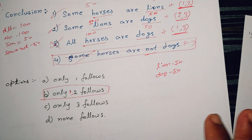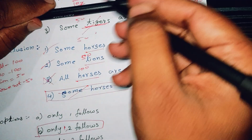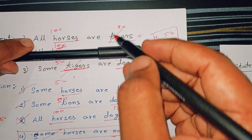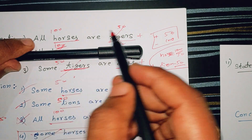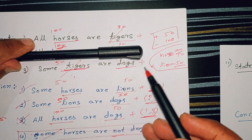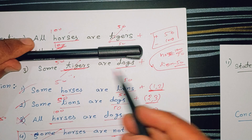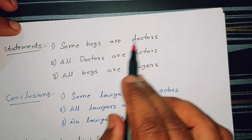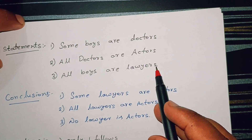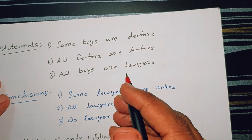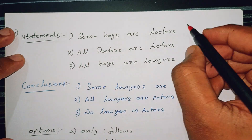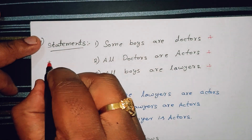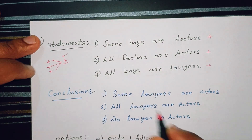What is the direct conclusion? Here is the direct answer. Question 11: 'Some boys are doctors. All doctors are actors. All boys are lawyers.' So the positive statement check: 'some boys are doctors' — it is positive. 'All doctors are actors' — it is positive. 'All boys are lawyers' — this is a positive statement. So if you have three positive statements, the conclusion is positive.